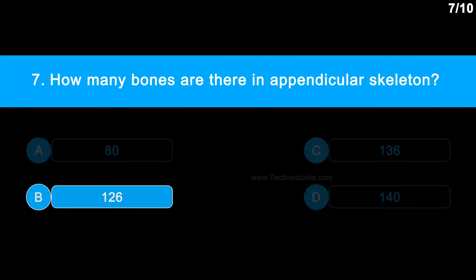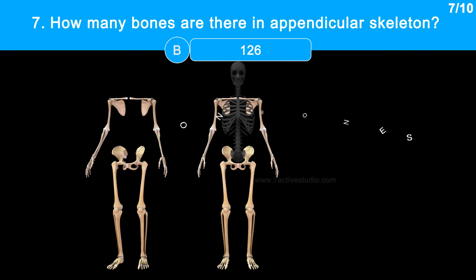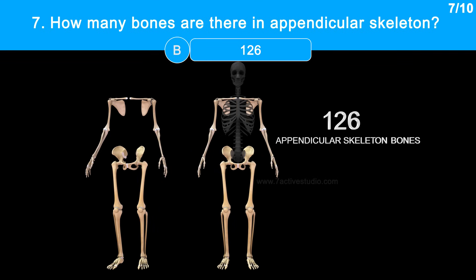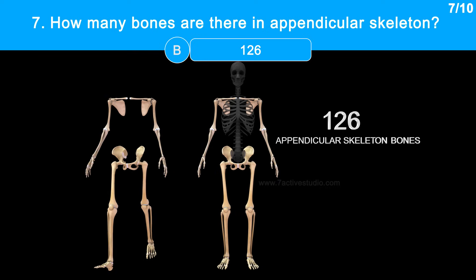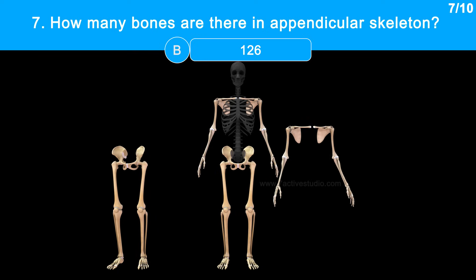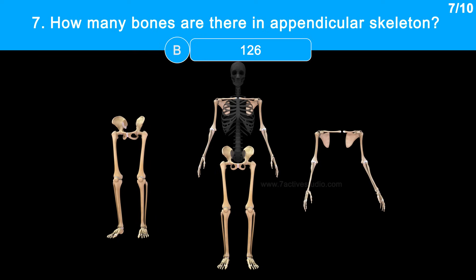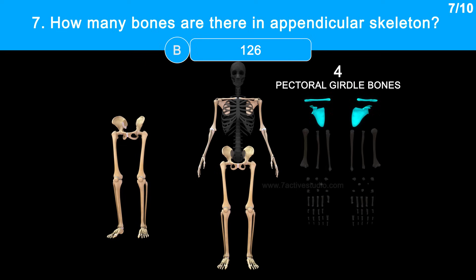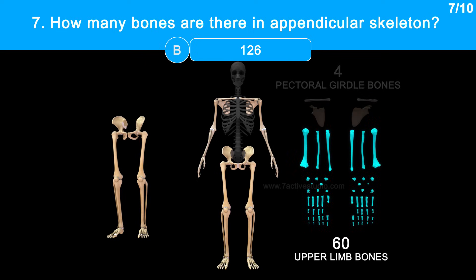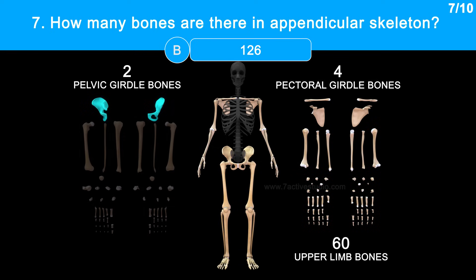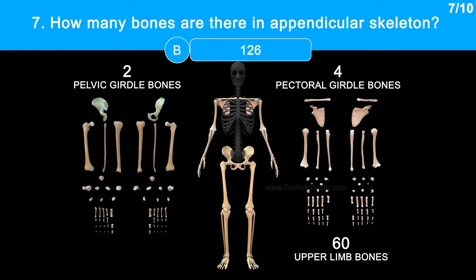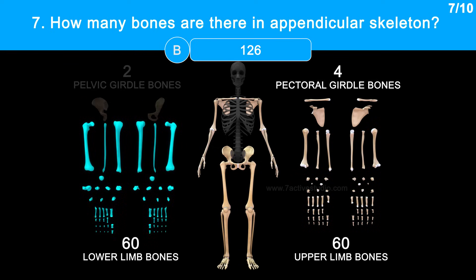The correct answer is option B, 126. There are a total of 126 bones in the appendicular skeleton. The human body has two arms and two legs with several bones in each: 4 pectoral girdle bones, 60 upper limb bones, 2 pelvic girdle bones, and 60 lower limb bones.